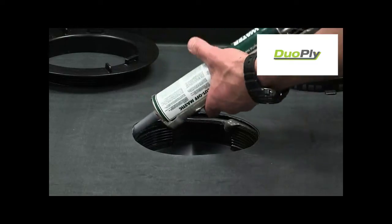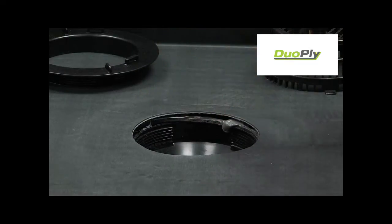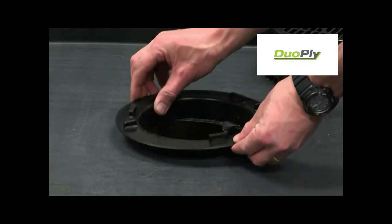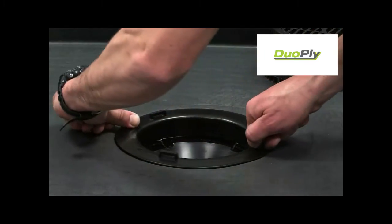Apply a continuous bead of water cut-off mastic between the membrane and the drain. Screw down the securement ring to compress the mastic.